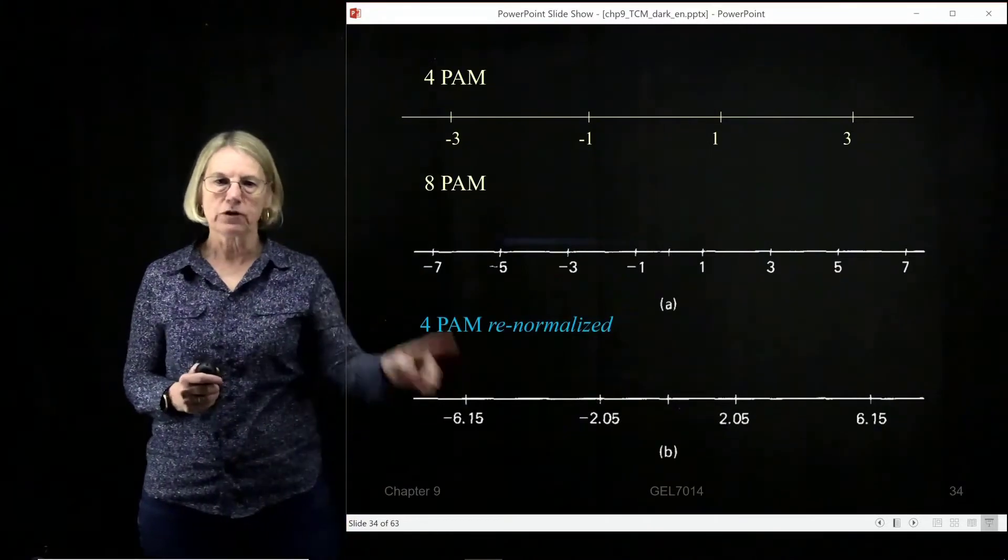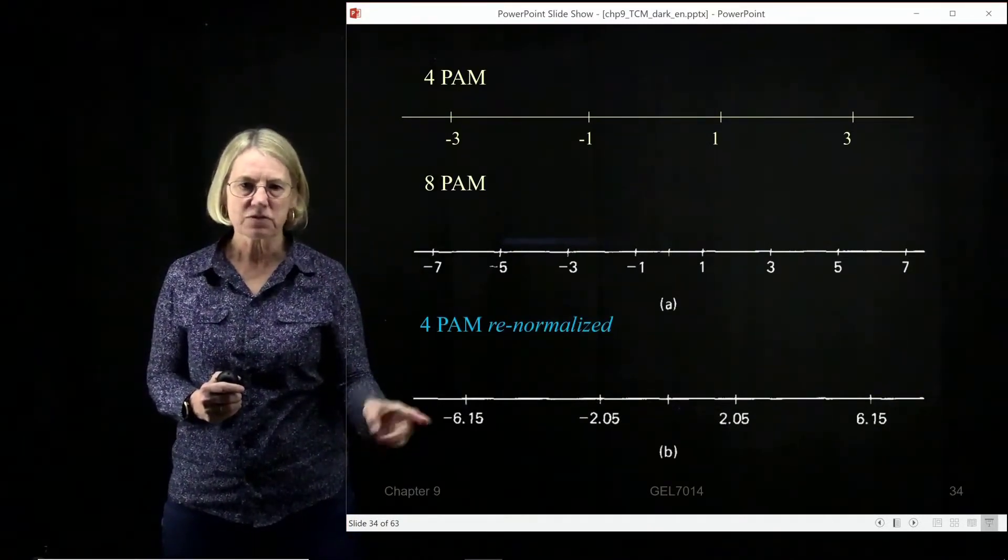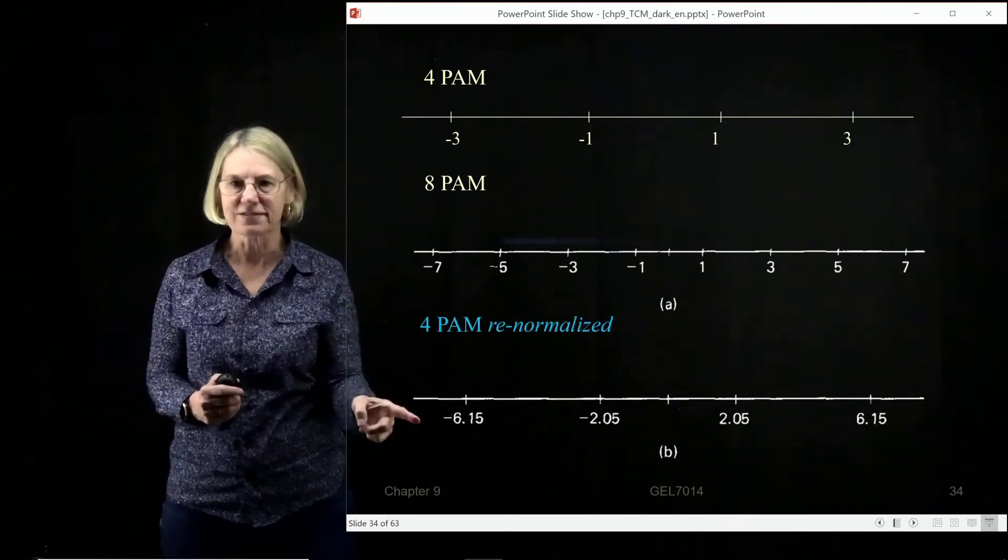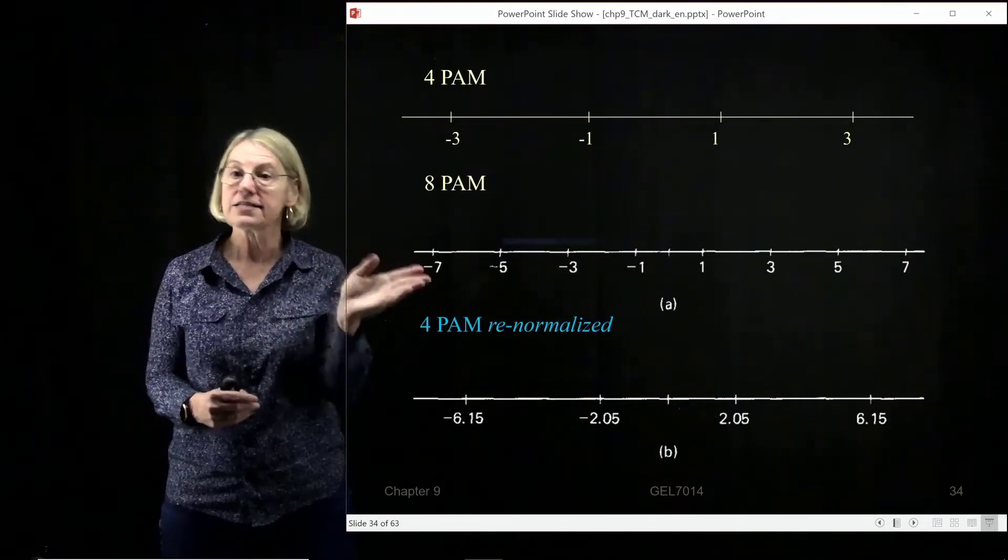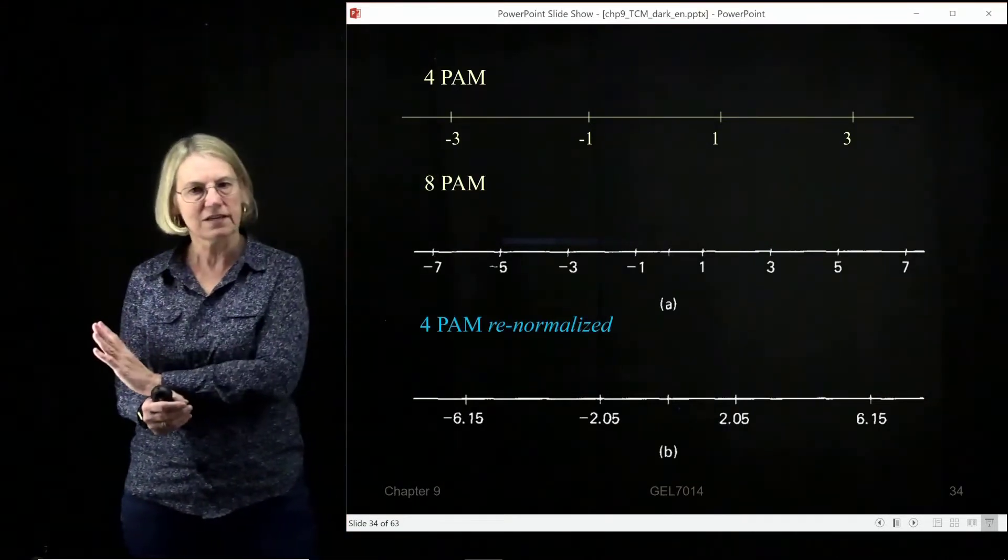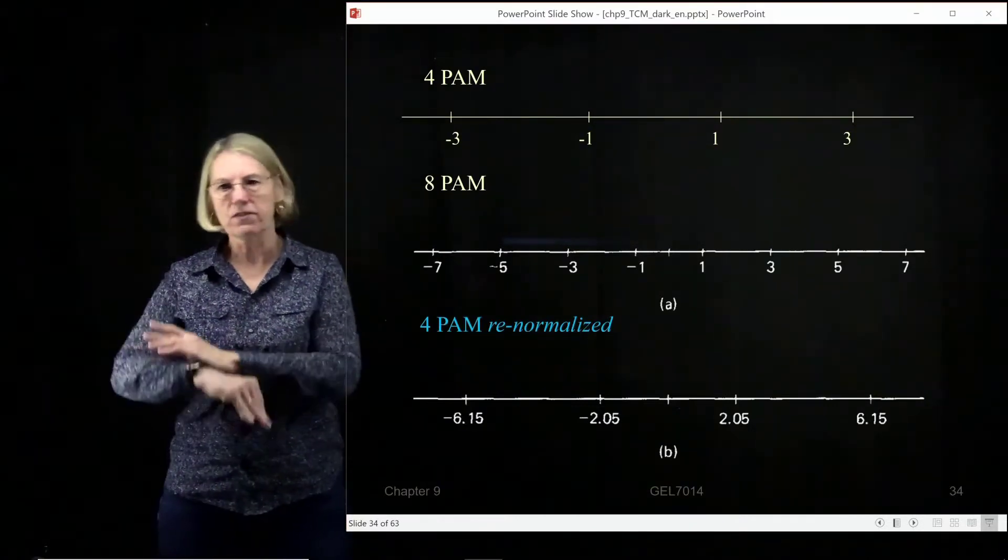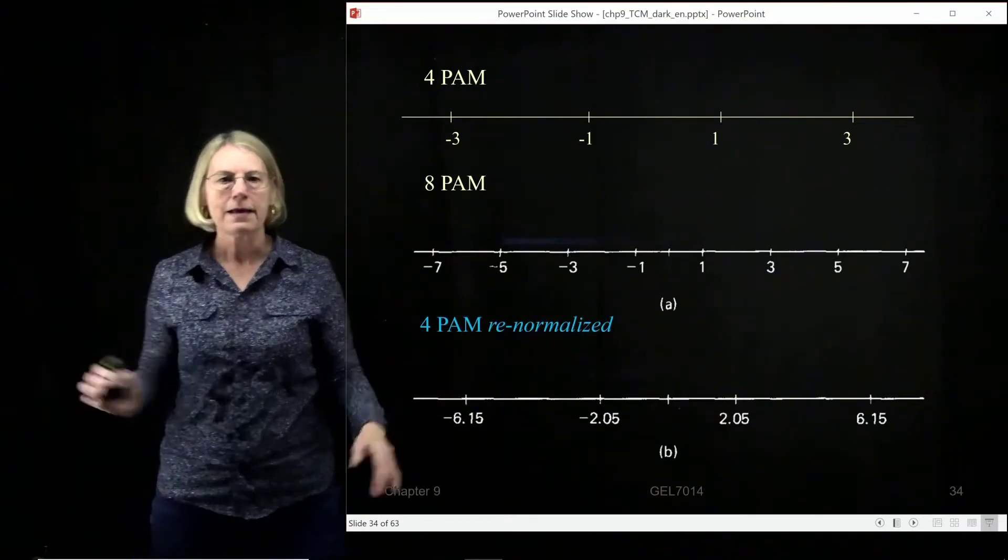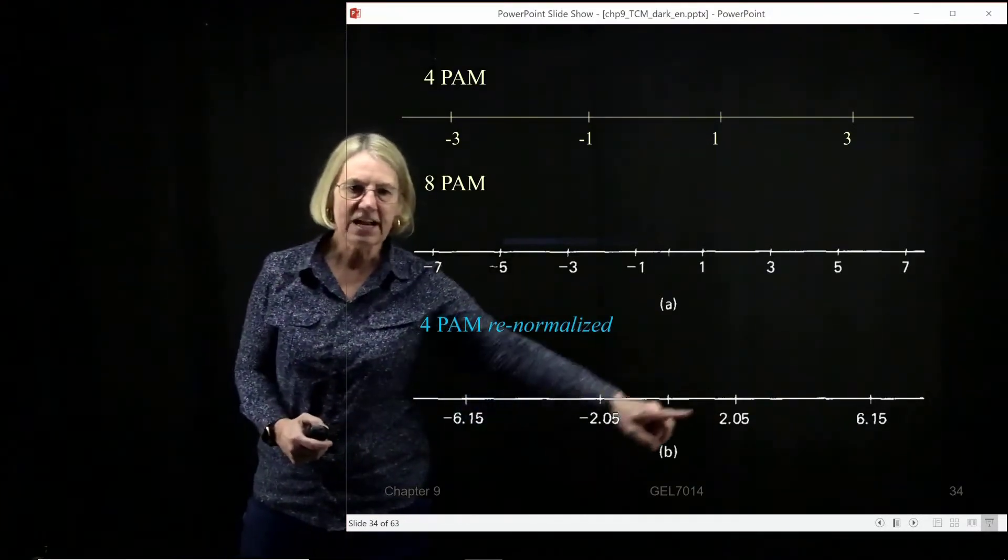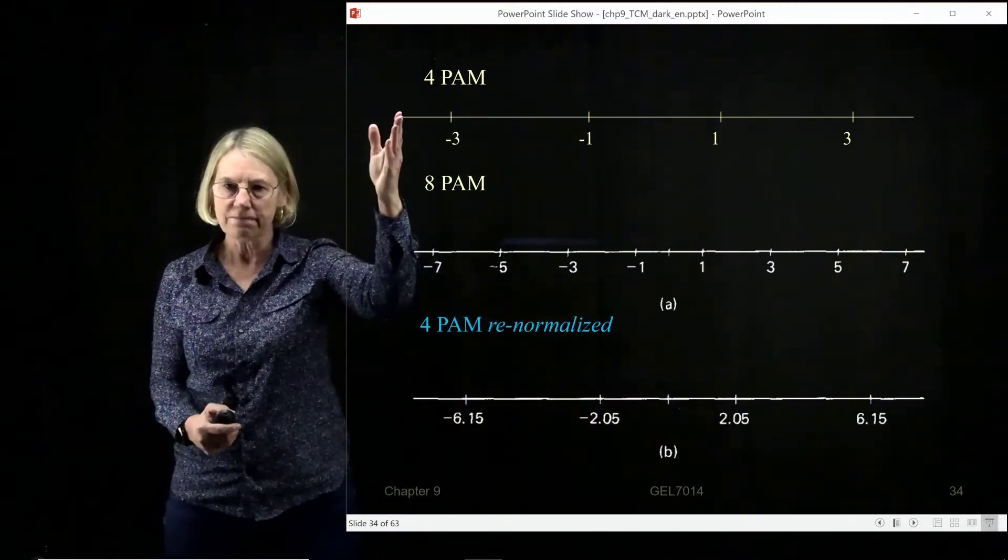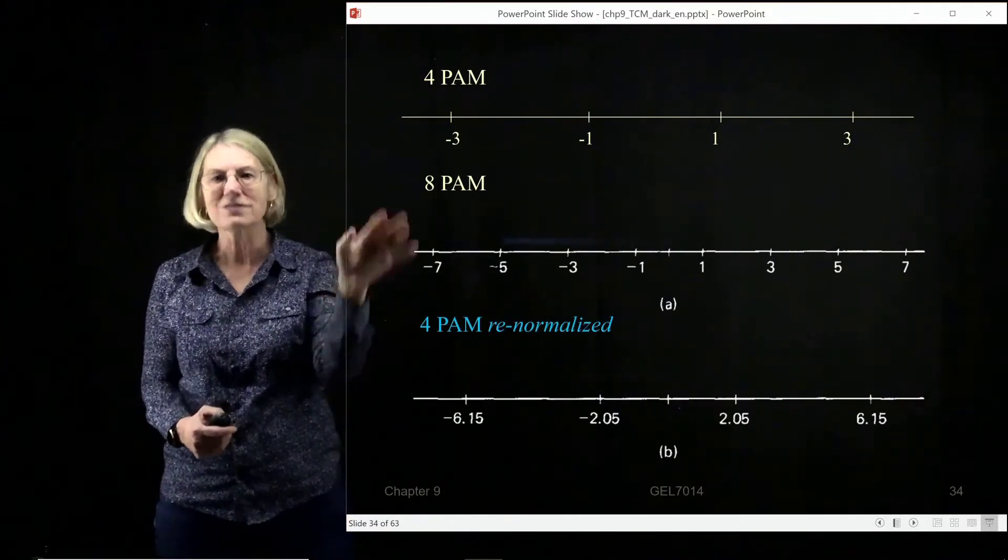So what I'm going to do is I'm going to renormalize the 4 PAM. I'm going to renormalize them so that at least these two IQ spaces, or I spaces, these two spaces at least are self-consistent. I haven't normalized them to the energy per symbol, which would be the way I could compare them across any modulation format. But for this example, I'm going to cheat. And so what I have done here is I've given you some new coordinates in 4 PAM. So they're not the easy coordinates, but I am going to keep the easy coordinates in 8 PAM.